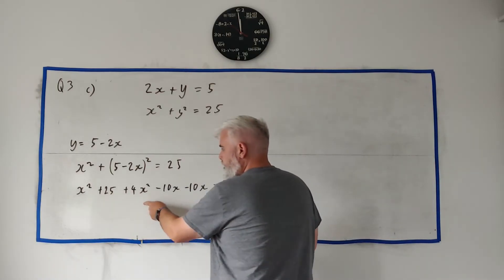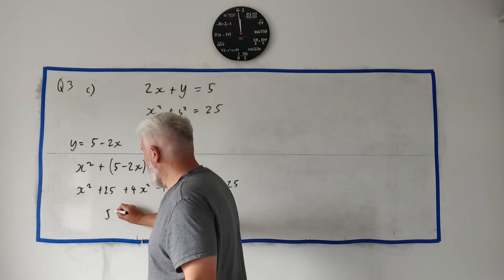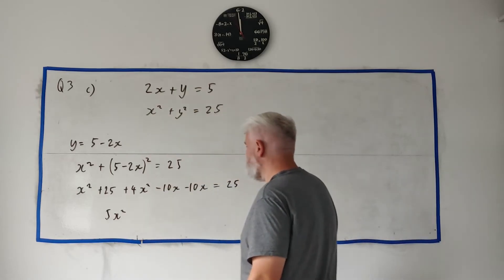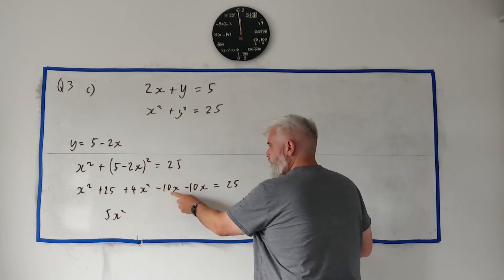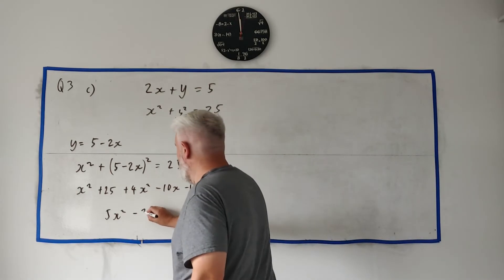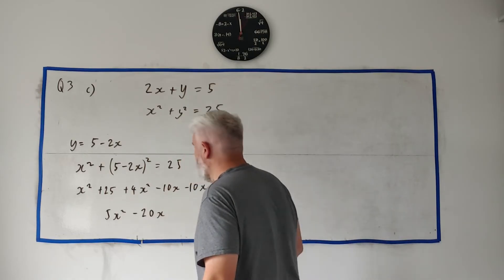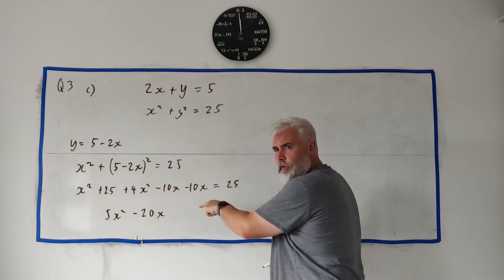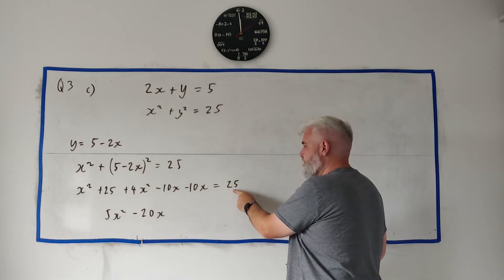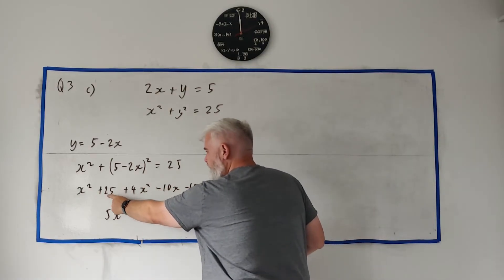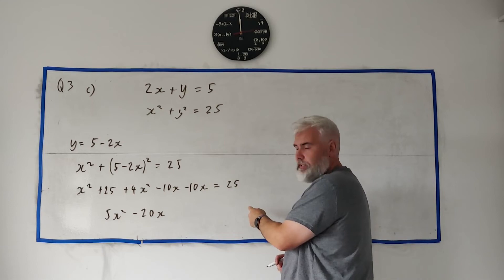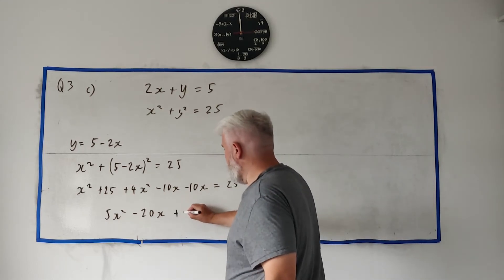Clean all this up. All the x squares. x squared, 4x squared. We get 5x squared. All the x's, we have minus 20x. All the numbers. If we move this guy over, take 25 from both sides, we have 25 minus 25, that's just 0. Let's write in plus 0.